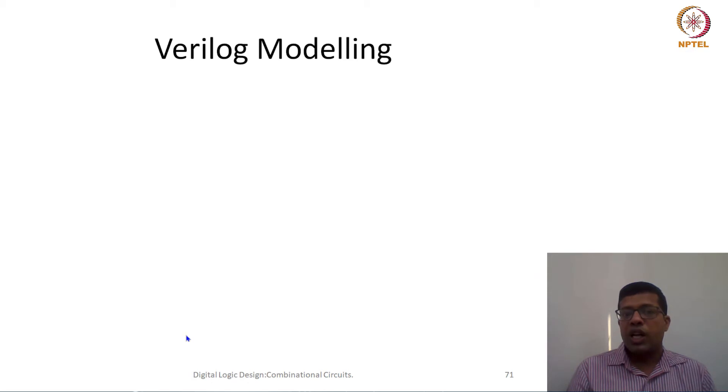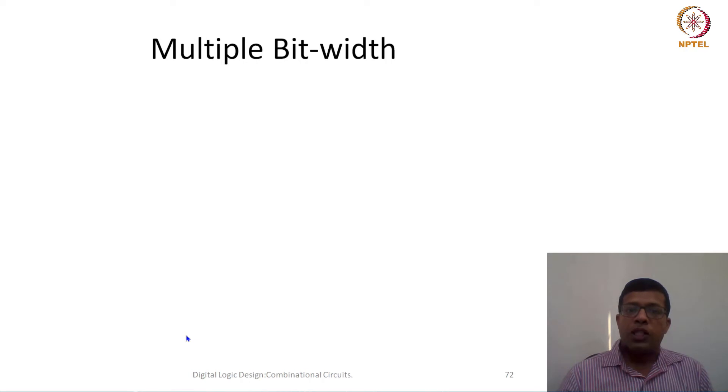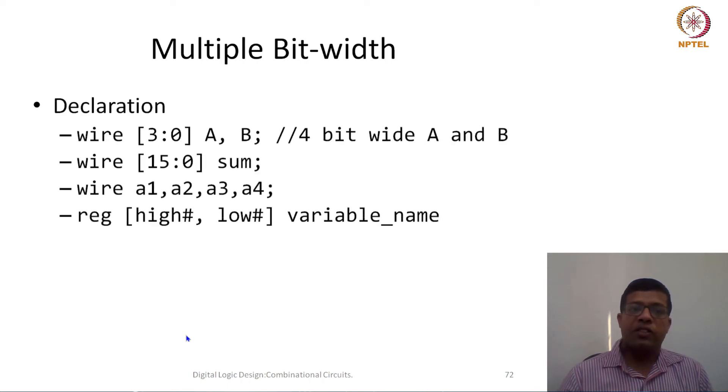The most important concept which would be required here is that we have to use arrays or bit vectors. That means more than one bit we need as an input as well as an output. So how to handle those bit vectors? I will quickly spend some time on this multiple bit width.